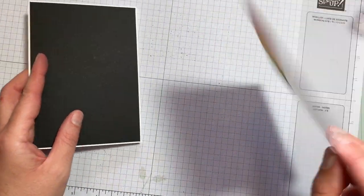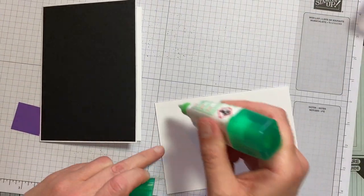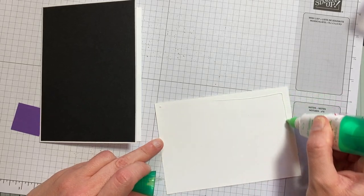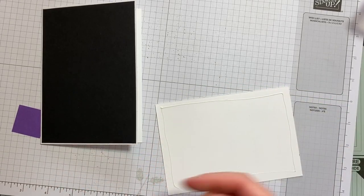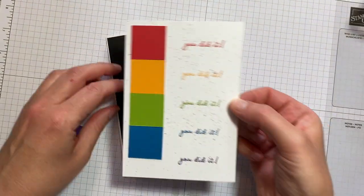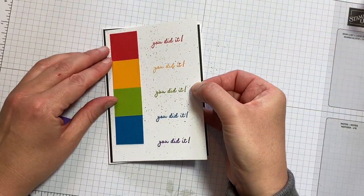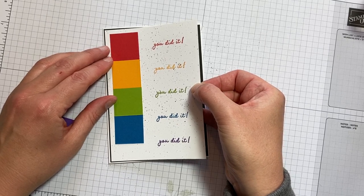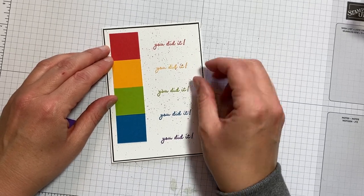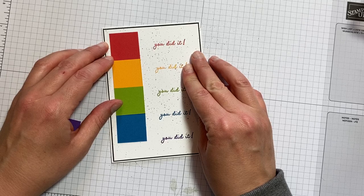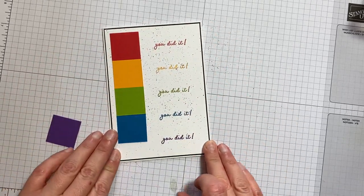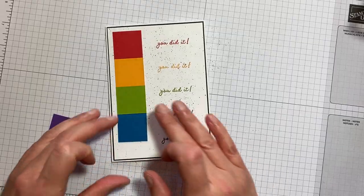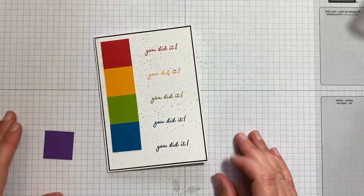So pretend that's got all of the different colours on. We're then going to pop that on. And it's quite a thin black border, but it just helps those colours to stand out.